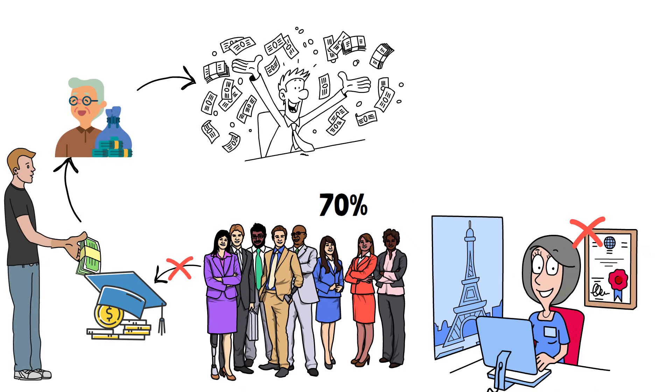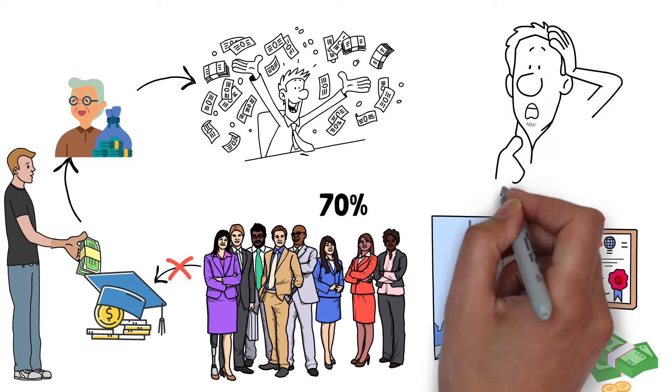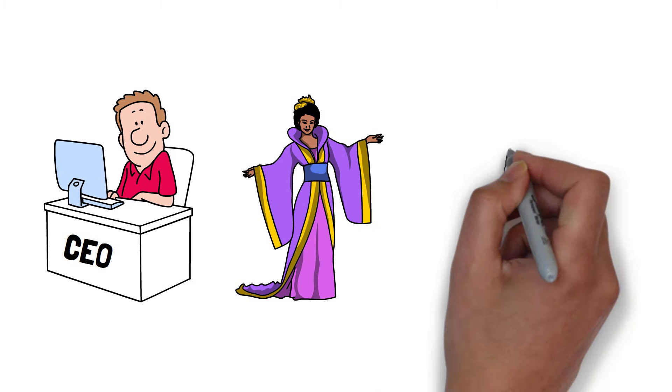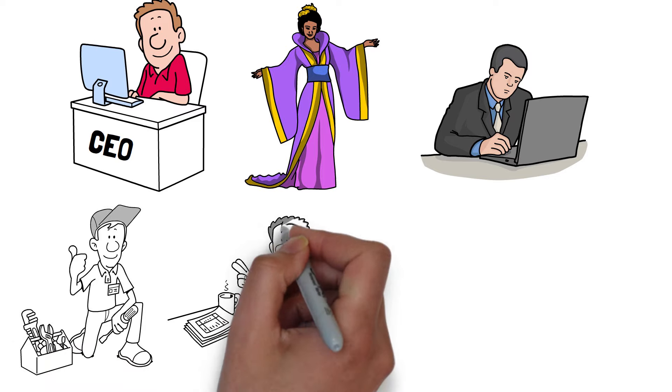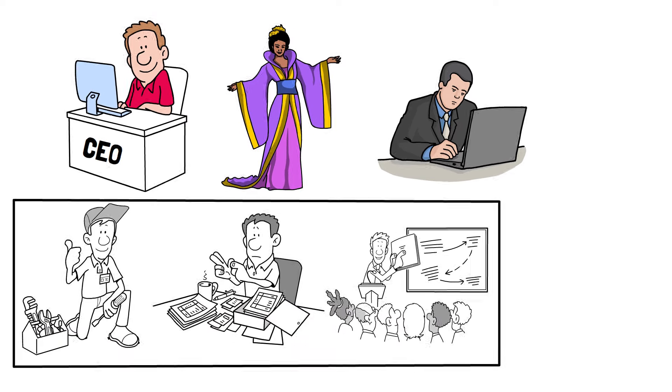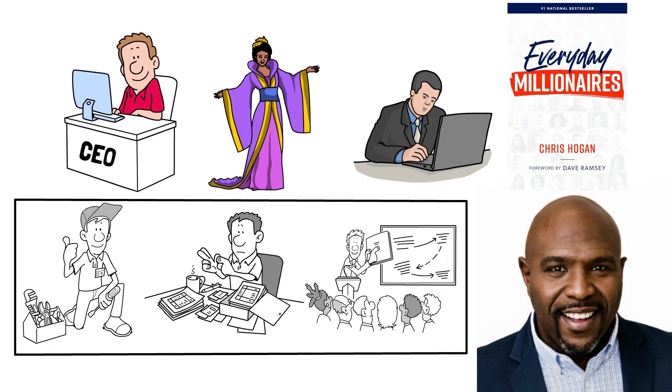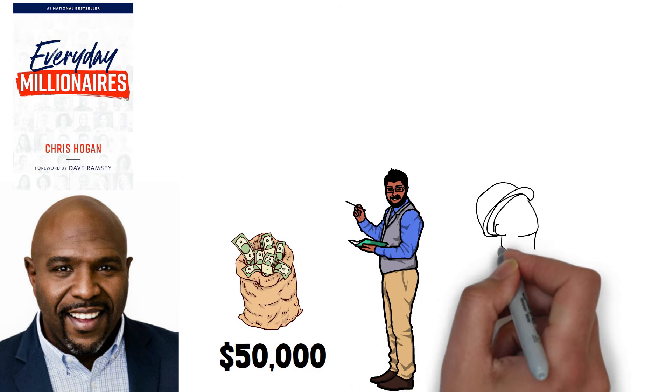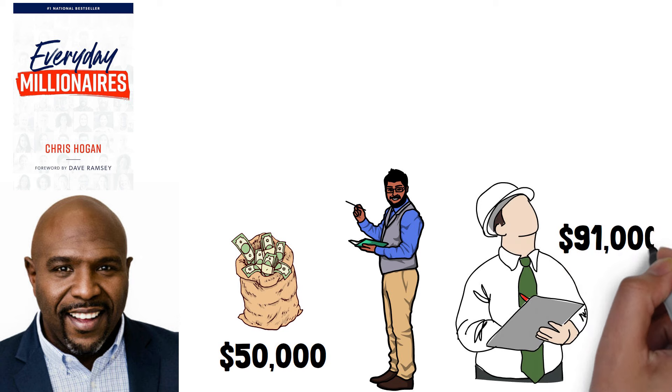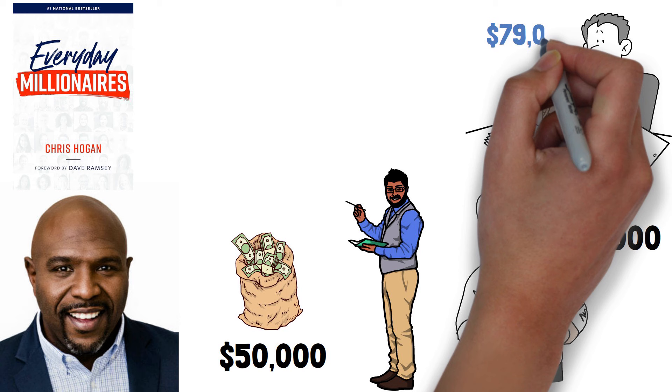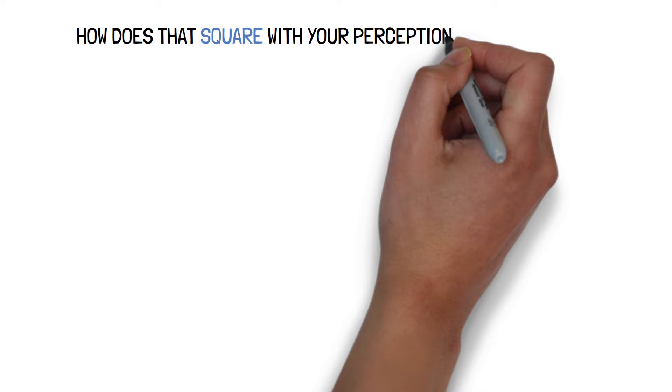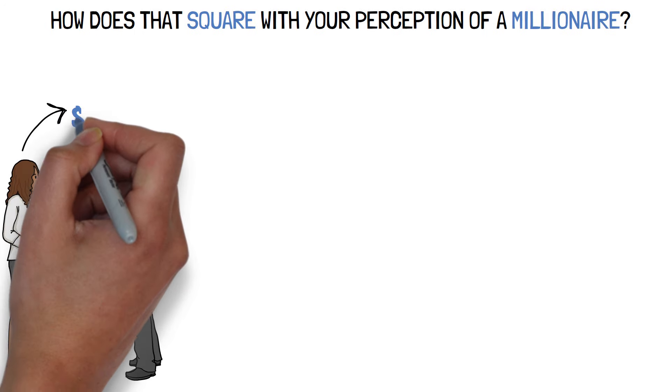The majority of rich people do not have well-paying occupations. This one may surprise you and dispel your misconception about millionaires. Most people believe that all millionaires are CEOs, actors, or the owners of highly successful firms. Engineers, accountants, and teachers are the top three jobs among the 10,000 millionaires polled in Chris Hogan's Everyday Millionaire Survey. Despite the fact that the average salary is roughly $50,000, teaching is one of the most prevalent jobs held by millionaires. Engineers make an average of $91,000 a year, while accountants make an average of $79,000. Those aren't exactly high earnings, especially when you consider how much of it might be gobbled away by income taxes. How does that square with your perception of a millionaire?